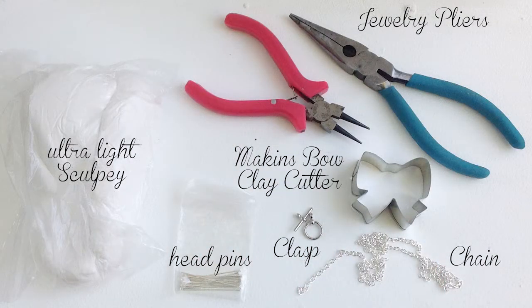For this project you'll need ultralight Sculpey, head pins, a Macon's Bow clay cutter, a toggle or lobster clasp, chain, and jewelry pliers and wire cutters.